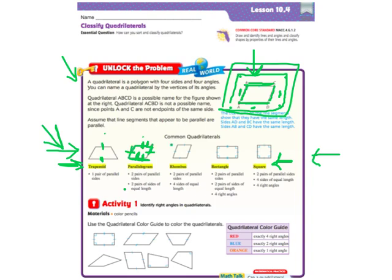Third one is a rhombus. It has two pairs of parallel sides. That's parallel to that and that's parallel to that and it also has four sides of equal length. So all the sides are equal length.